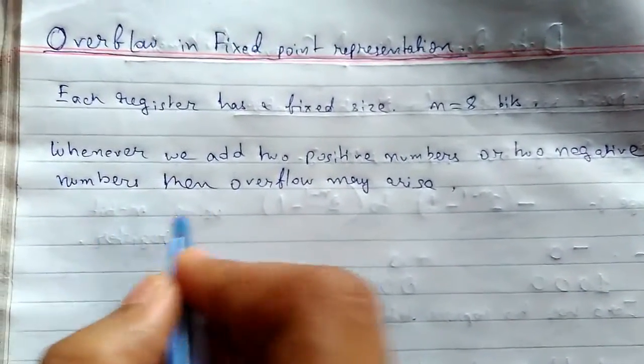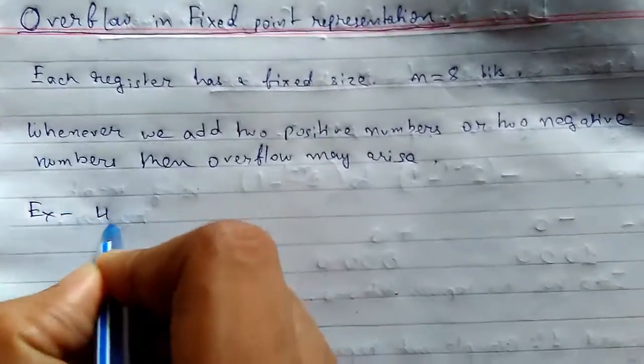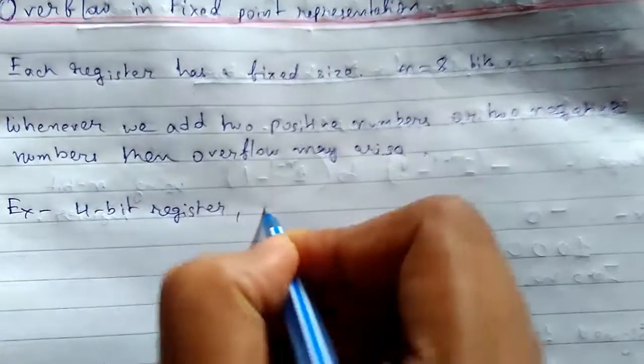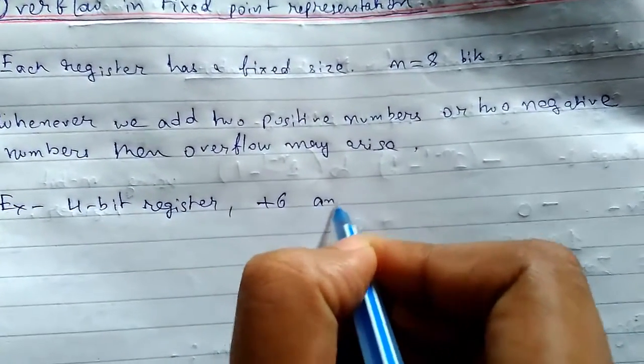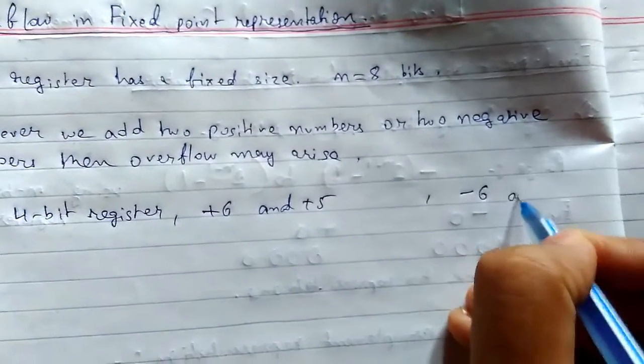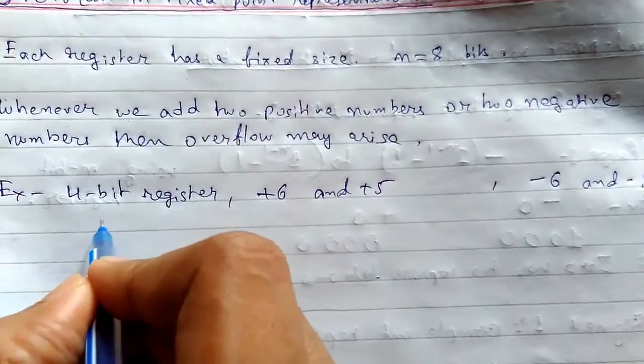For example, using a 4-bit register, we need to add +6 and +5, and two negative numbers like -6 and -5.